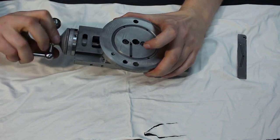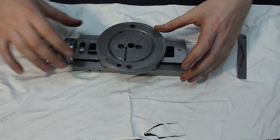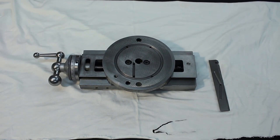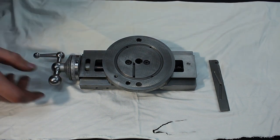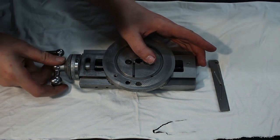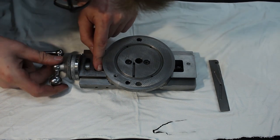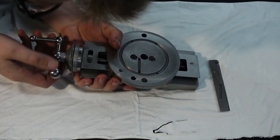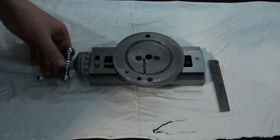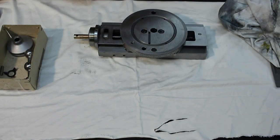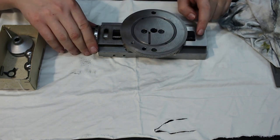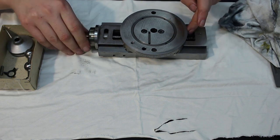So first we have to take this guy apart, of course, because otherwise we cannot do very much. Over here we have a screw, which holds the bushing, the end bushing for the spindle.